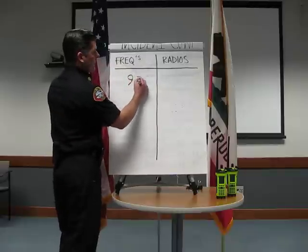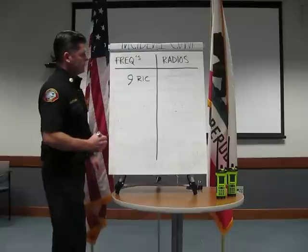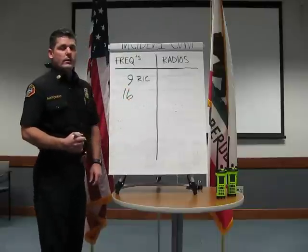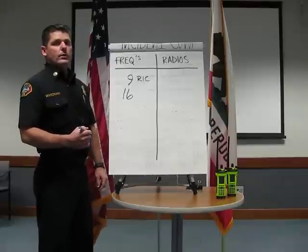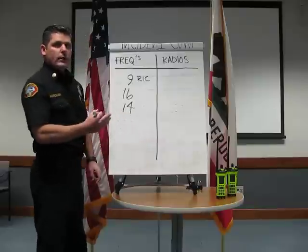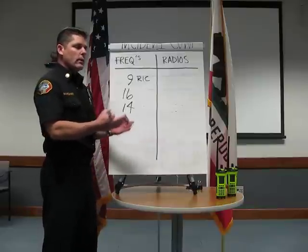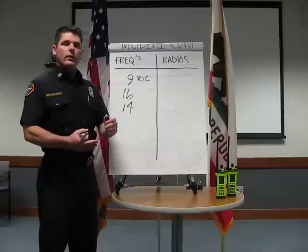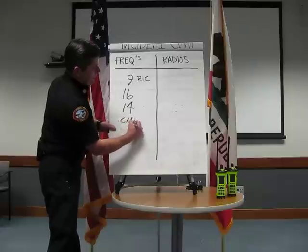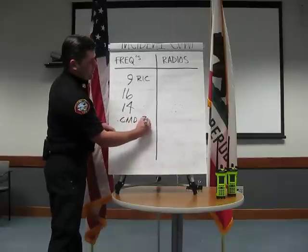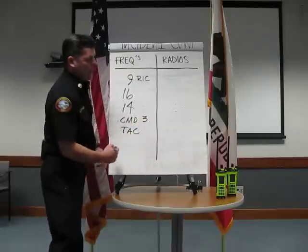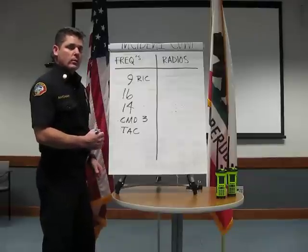RED-9, or the RIC channel. Channel 16, which is XLC access — the emergency trigger channel. Channel 14, reverse access, if for some reason the firefighter hitting the emergency trigger cannot access the 16 repeater. Followed by command, which in this scenario was RED-3, and TAC, which in our scenario was RED-2.